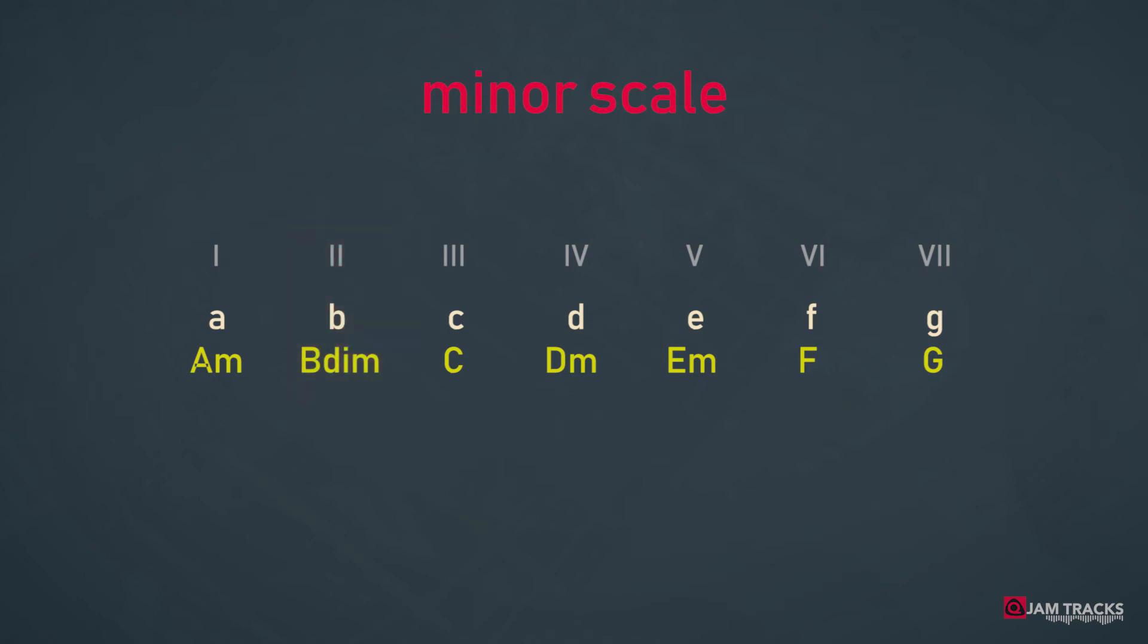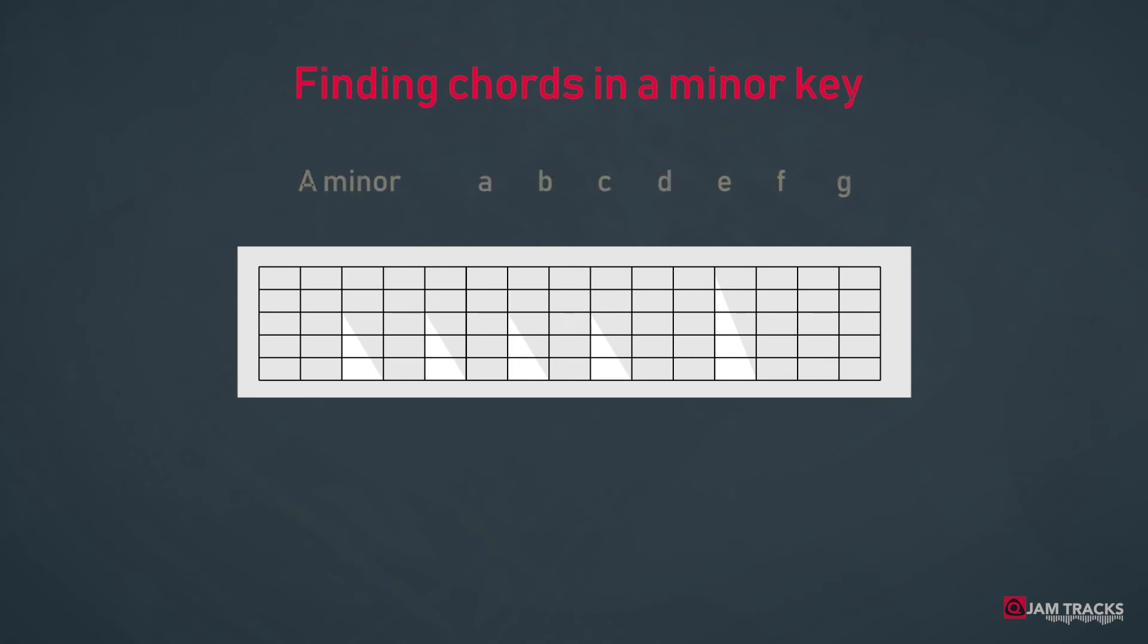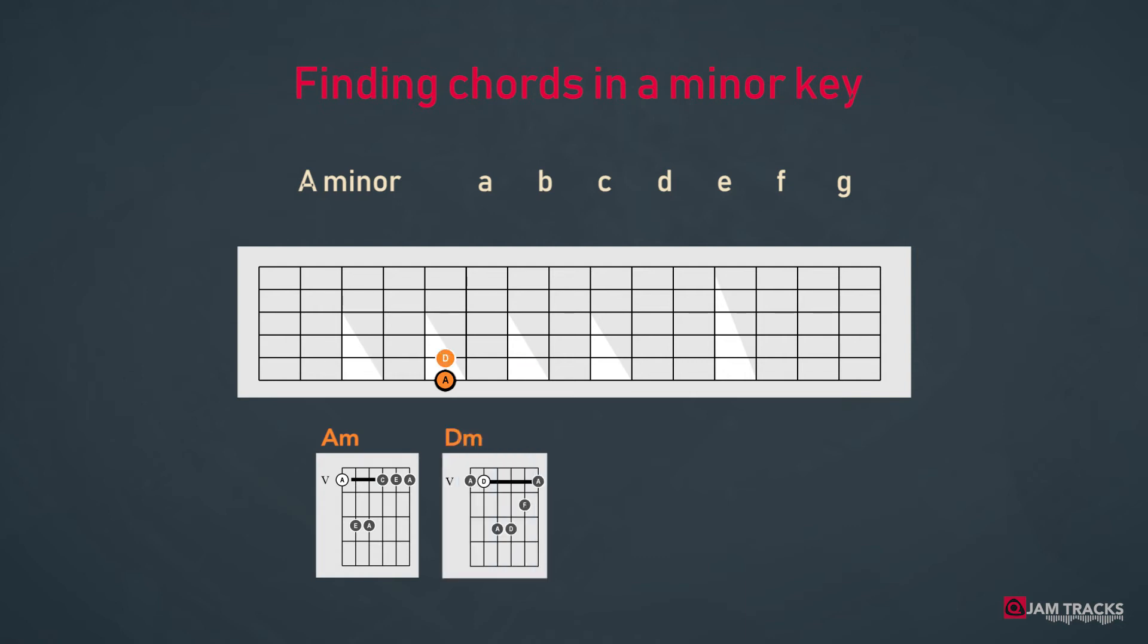Just like before with the major key, the roots of the chord groups in a minor key outline a specific pattern on the neck. Let's sail into the key of A minor. So we have the A on the sixth string, with an A minor chord. D just underneath the A, and is the root of the D minor chord. And the root of the last minor chord is E, which is placed two frets up from the D. We can refer to this group as the minor triangle.